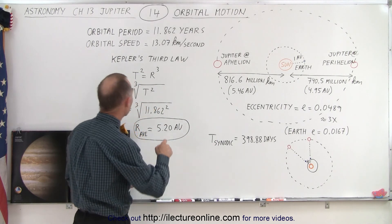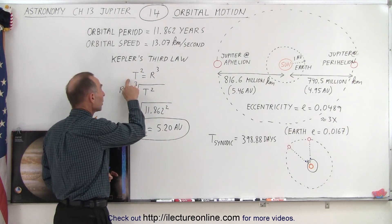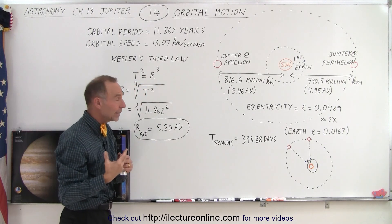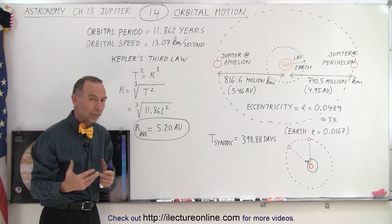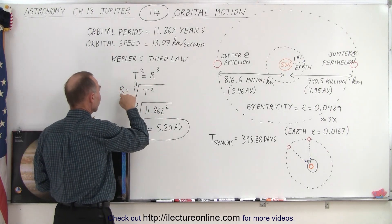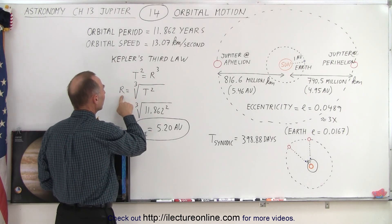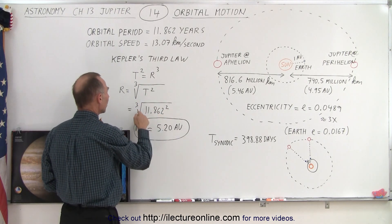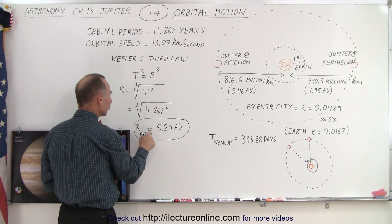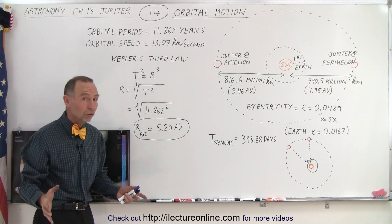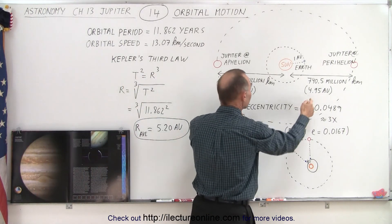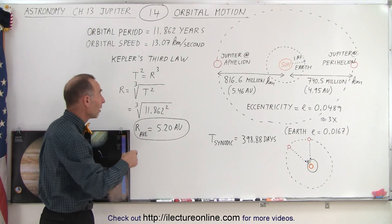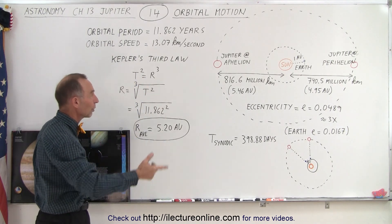Now if we take Kepler's third law, we know that the period squared equals the distance to the planet cubed. That means the period has to be in years and the distance has to be in astronomical units. So we can solve this equation for R, the average distance between the Sun and Jupiter, which would be the cube root of the period squared. So we take 11.862, square that, then take the cube root, and we get the average distance to be indeed 5.2 astronomical units. And that is how, during Kepler's days, we were able to find the relative distance of the planets by just measuring the time it took for them to make one trip around the Sun.